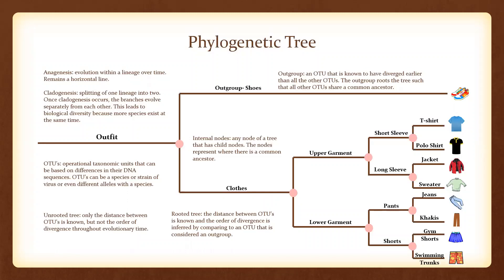As you can see, we have eight total clothing items and an outgroup item of shoes. If you look closely starting from the right hand side, you can see that each horizontal line begins to grow longer and longer as you follow the branches from the right hand side to the left. This is because the more closely related items will have the shortest branches.